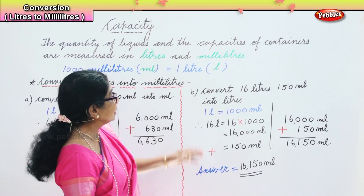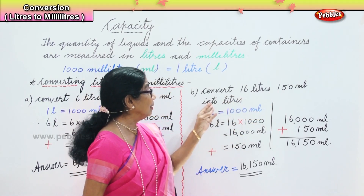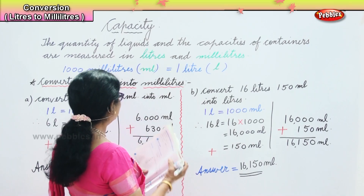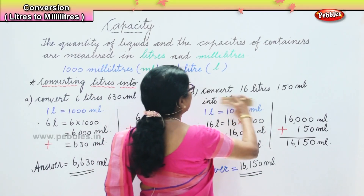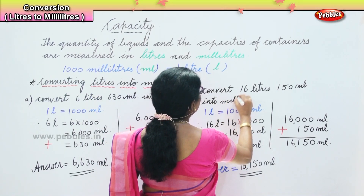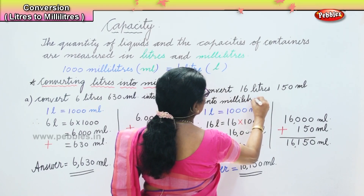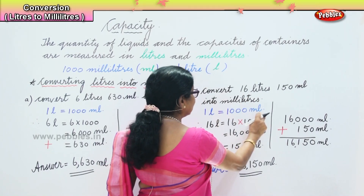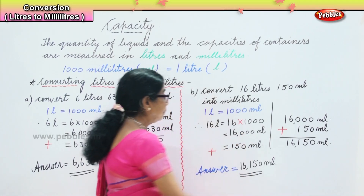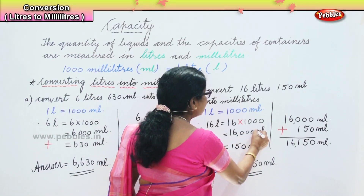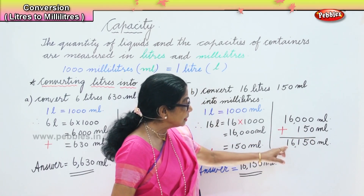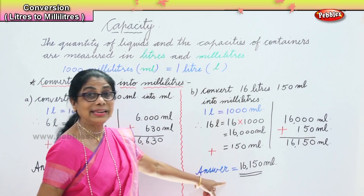Alright, so we learned to convert sixteen liters, one hundred and fifty milliliters into milliliters. One liter is equal to one thousand milliliters, sixteen liters equal to sixteen thousand milliliters, plus one hundred and fifty milliliters gives us sixteen thousand one hundred and fifty milliliters — that is our answer.